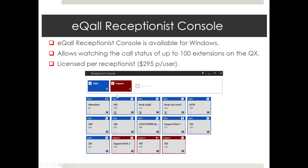We also have an add-on: the eCall receptionist console. It's available for Windows and allows you to watch the call status of up to 100 extensions on the QX. It is a separate license per receptionist at $295 per user. You can keep track of all the different extensions and it helps the receptionist to manage those.